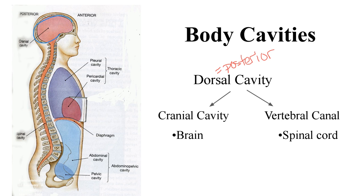The dorsal cavity is broken into the cranial cavity here in the head — cranial means head — which is going to hold the brain, and the vertebral canal, which is this orange part running all the way down in the middle of the spine, which is going to hold the spinal cord. So these cavities are spaces, because we have to have some hollow space within the body to hold the parts.